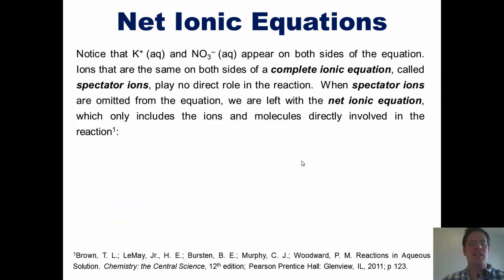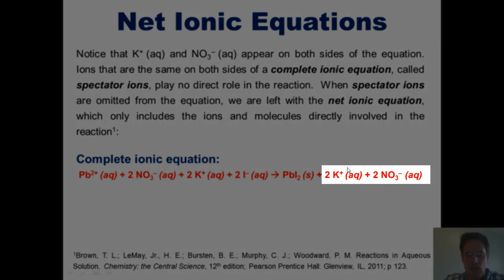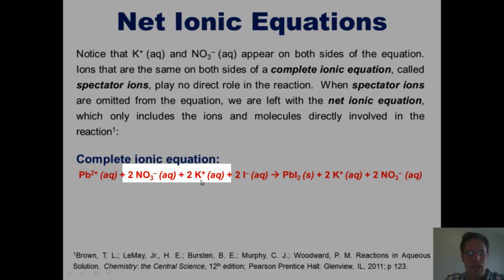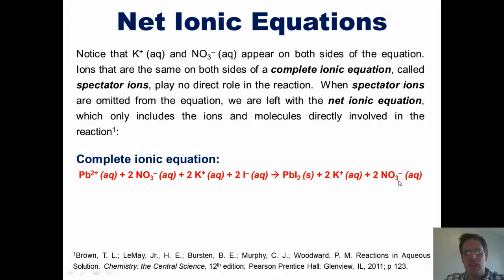Notice that K⁺ and NO₃⁻ appear on both sides of the equation, with the exact same coefficients in front of them. Ions that look exactly the same on both sides of the complete ionic equation are called spectator ions, and they do not play any direct role in the reaction.